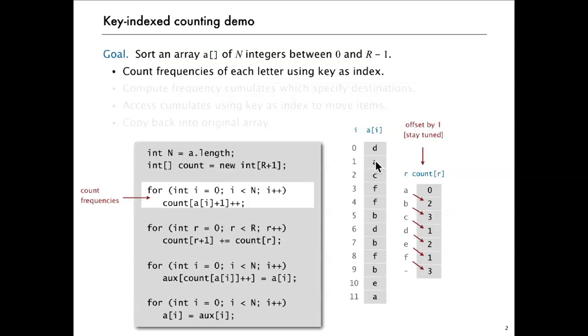So when we see an A that's zero, then we're incrementing count of one. When we see a B that's one, we're incrementing count of two, and so forth. So in this case, we increment count corresponding to D and then A and C and like that. So every time we encounter a new key, we simply increment one of these counters. In one pass through, we get an array that gives us the number of A's, B's, C's, D's, E's, and F's. That's the first pass of key indexed counting. Count the frequencies of each letter using the key as index.